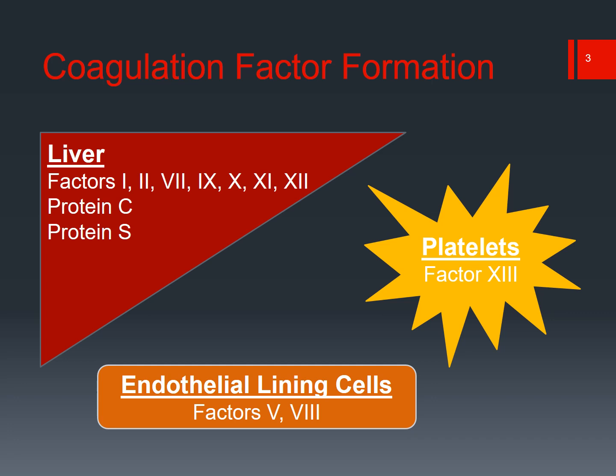There are a few factors that are made outside of the liver. We know that factor 13 is made within the platelets, which suggests it plays a part in bringing everything together. Factors 5 and 8 are made in the endothelial lining cells, which is where the injury is occurring.